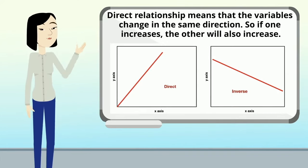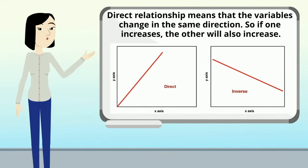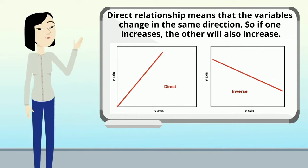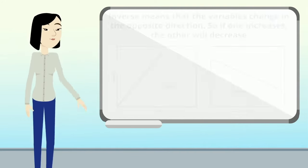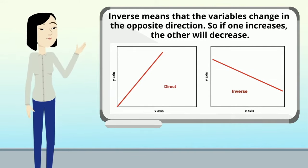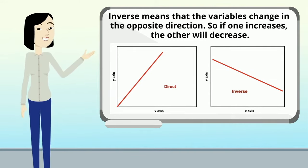Direct relationship means that the variables change in the same direction. So if one increases, the other will also increase. Inverse means that the variables change in the opposite direction. So if one increases, the other will decrease.